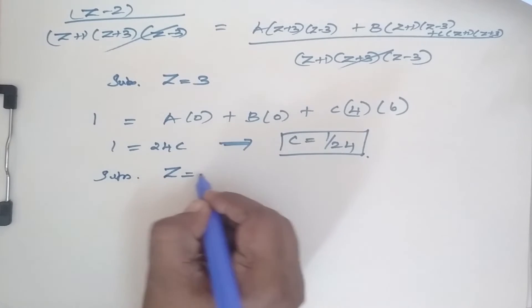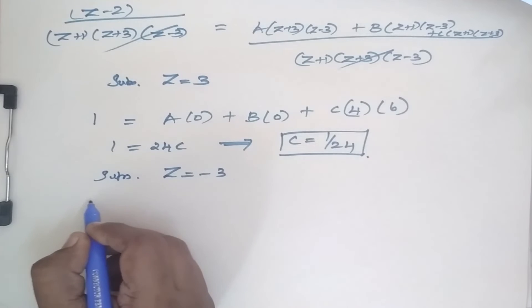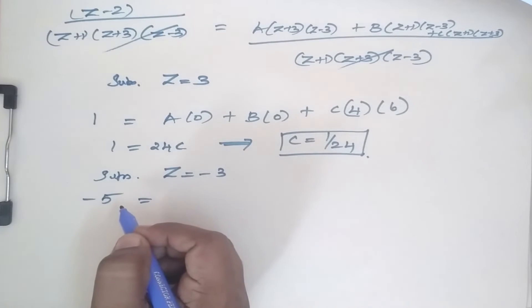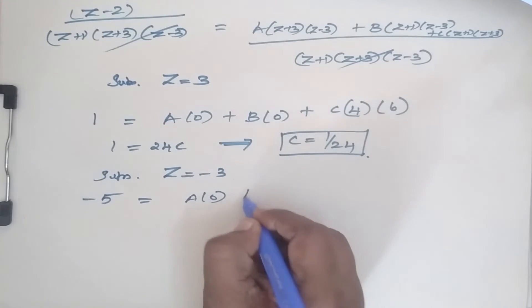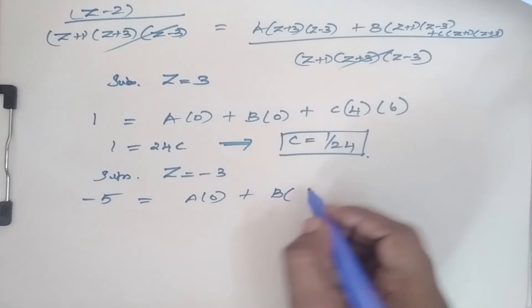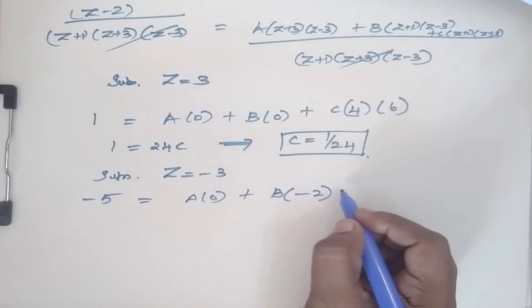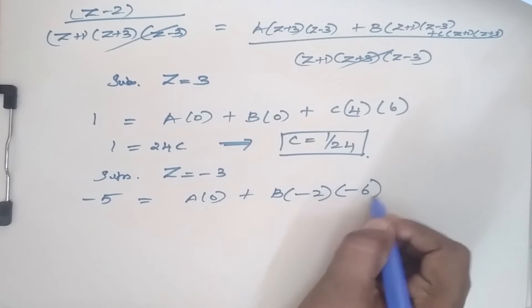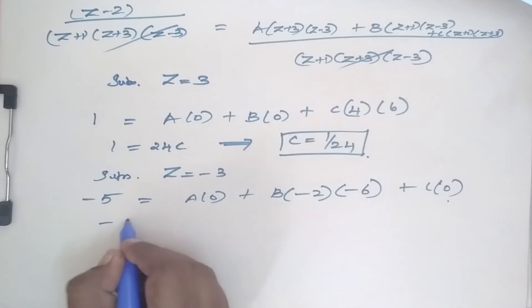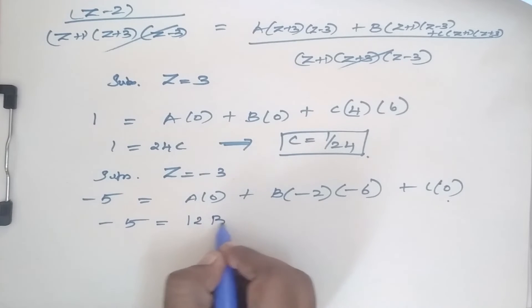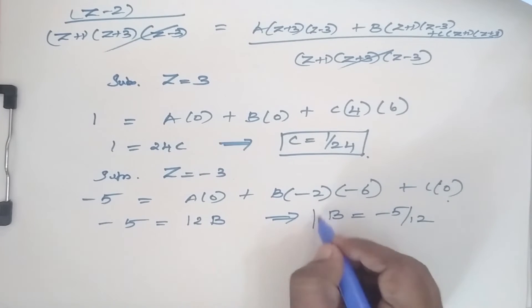Substitute z = −3 to find B. When z = −3, the numerator gives −3 − 2 = −5. The A and C terms vanish. So −5 = B·(−3+1)·(−3−3) = B·(−2)·(−6) = 12B. Therefore B = −5/12.